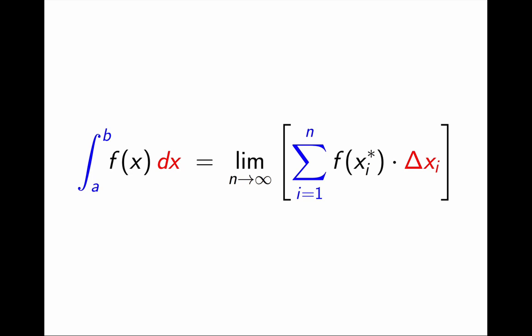I also want to mention that this notation is not perfect. Strictly speaking, the numbers xᵢ and xᵢ* should have two indices, i AND n, because they depend on the partition Pₙ. However, this notation is quite standard, so I will continue using it.